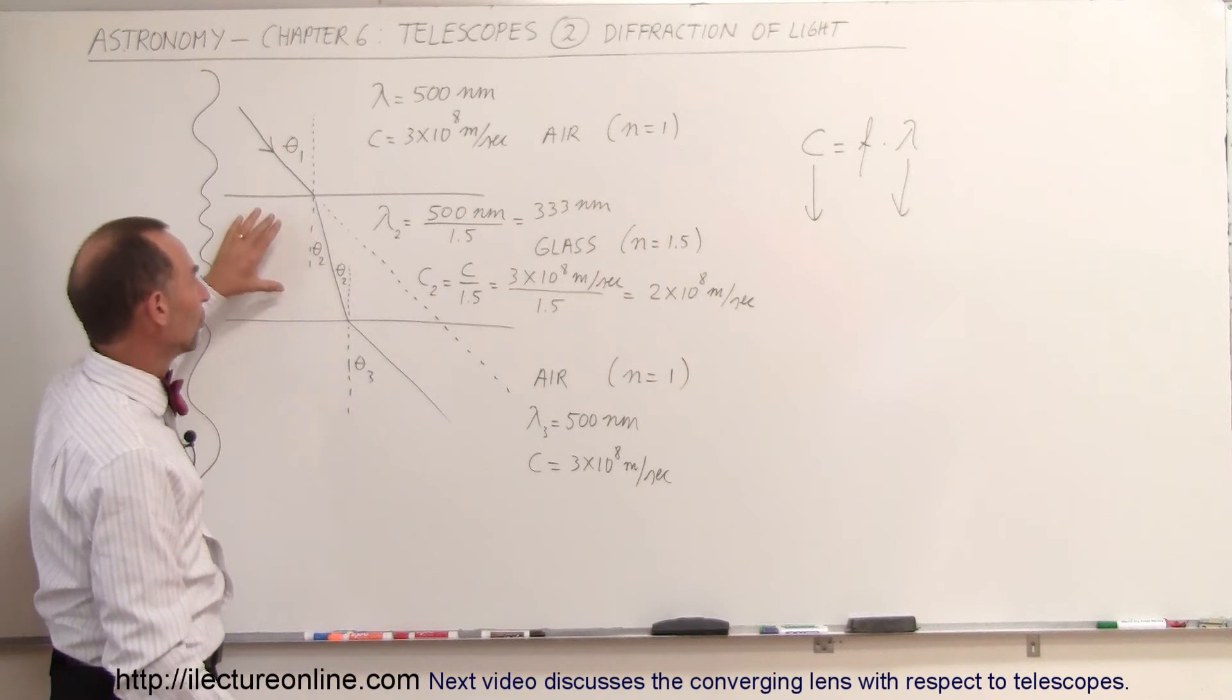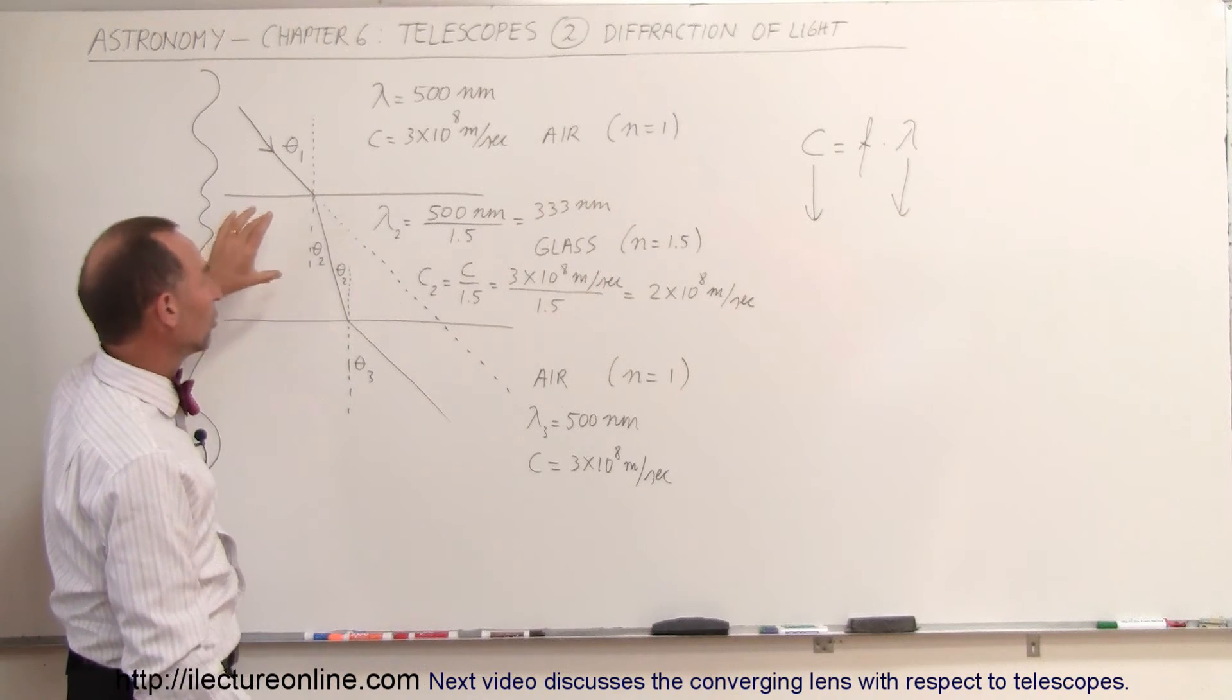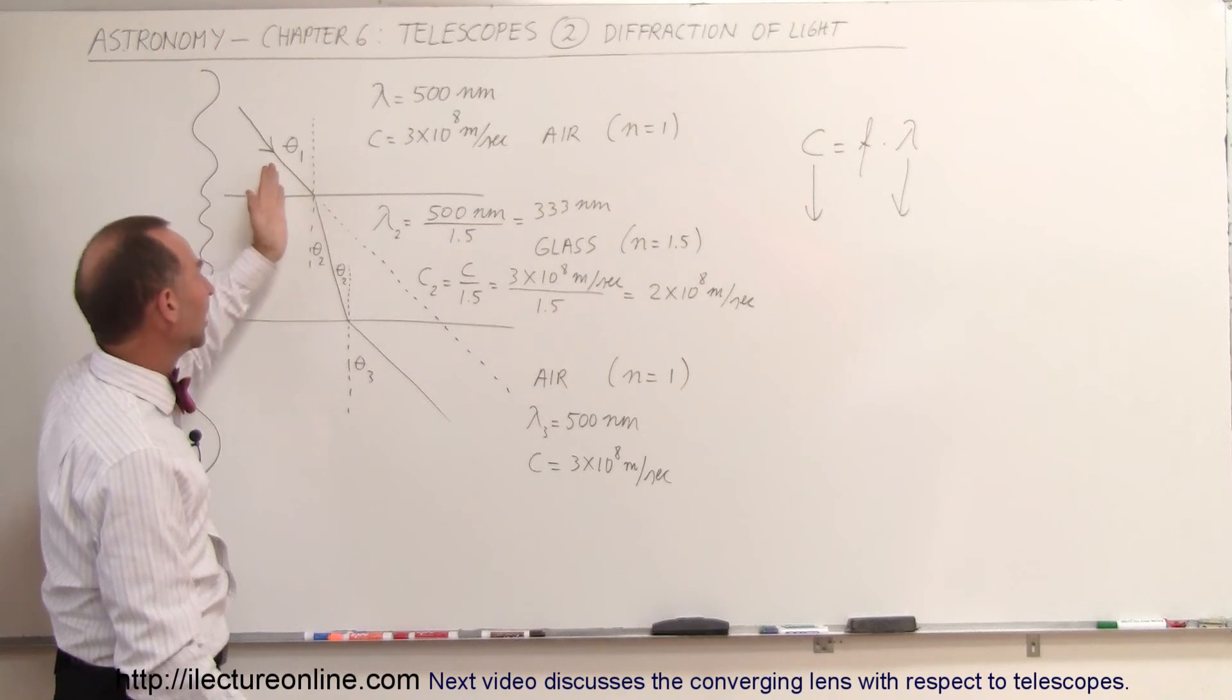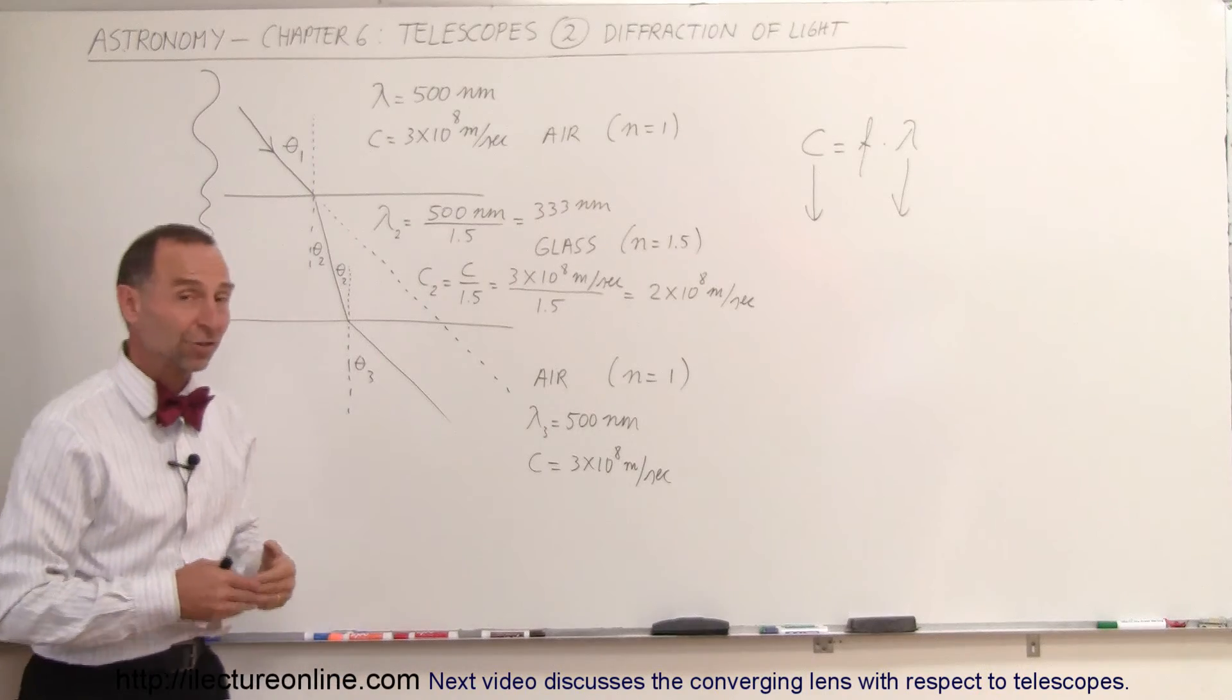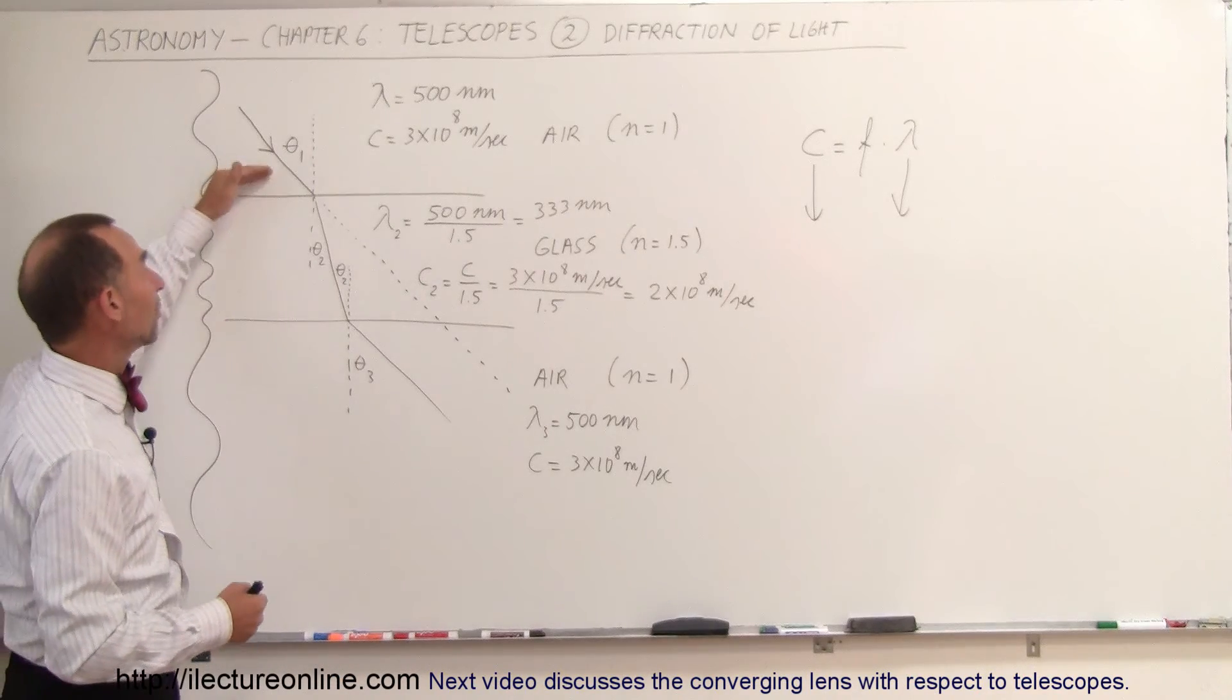So, the light, the wavelengths become smaller, the speed gets slower, and it changes direction upon entering a medium with an index of refraction that's greater than 1 when you go from air to that medium.